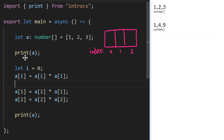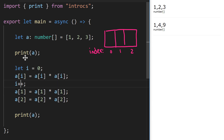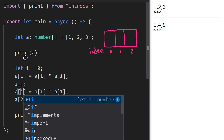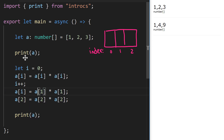After that line we're going to say `i++`, so we increment `i` by one. `i` started at zero on the previous line, and now after that line completes `i` is 1. So now we can say `a[i]`, which is `a` at index 1.